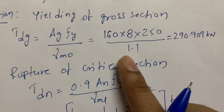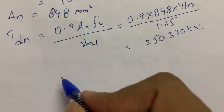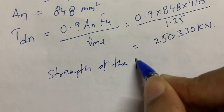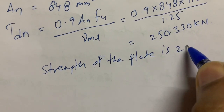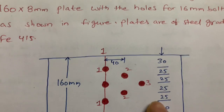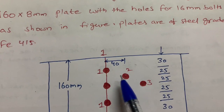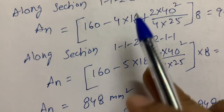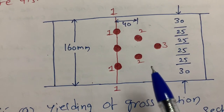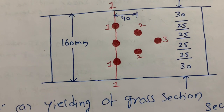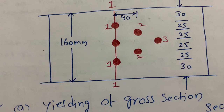Comparing the two failure values: Tdg (yielding) = 290.909 kN and Tdn (rupture) = 250.330 kN. We take the least value, so the design tensile strength of the plate is 250.330 kN. The key aspect of this problem is correctly accounting for the staggered pitch in the An calculation across three different rupture sections. Block shear was not calculated because the bolt spacing is very tight, making rupture the governing failure.